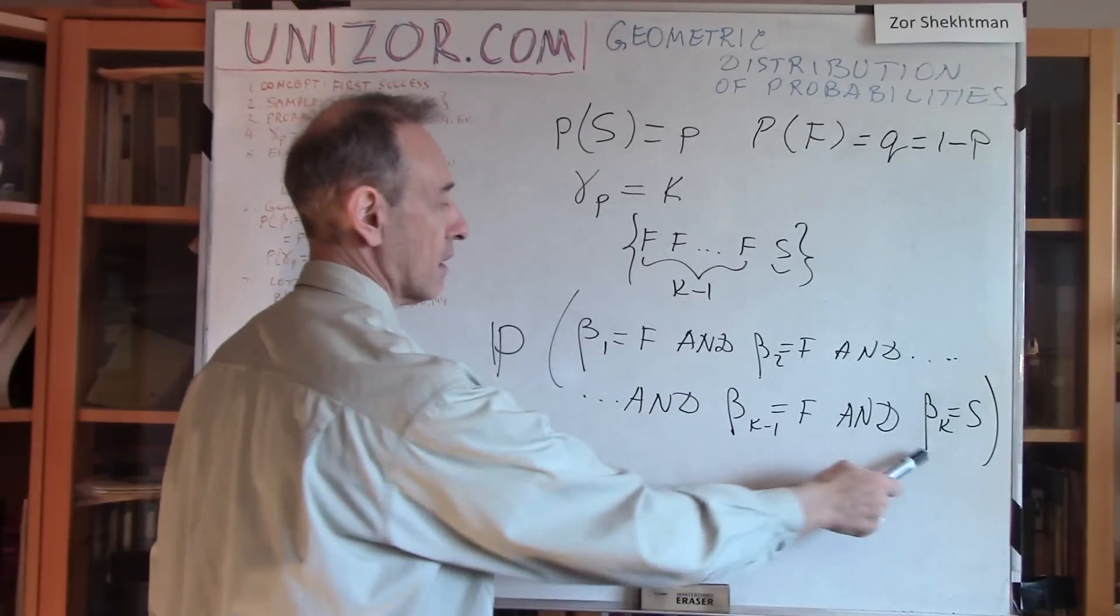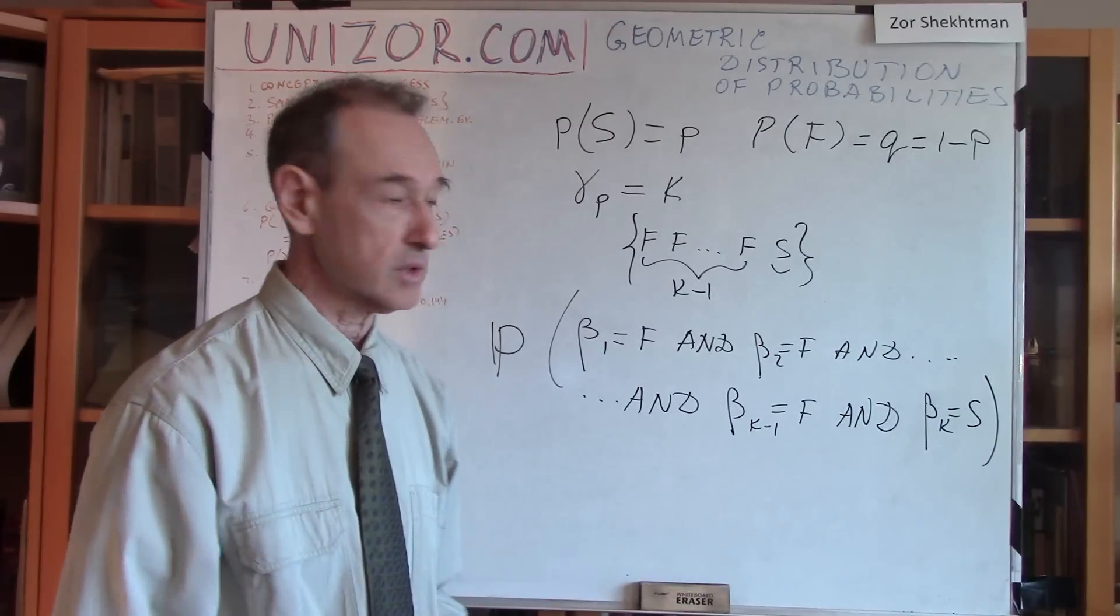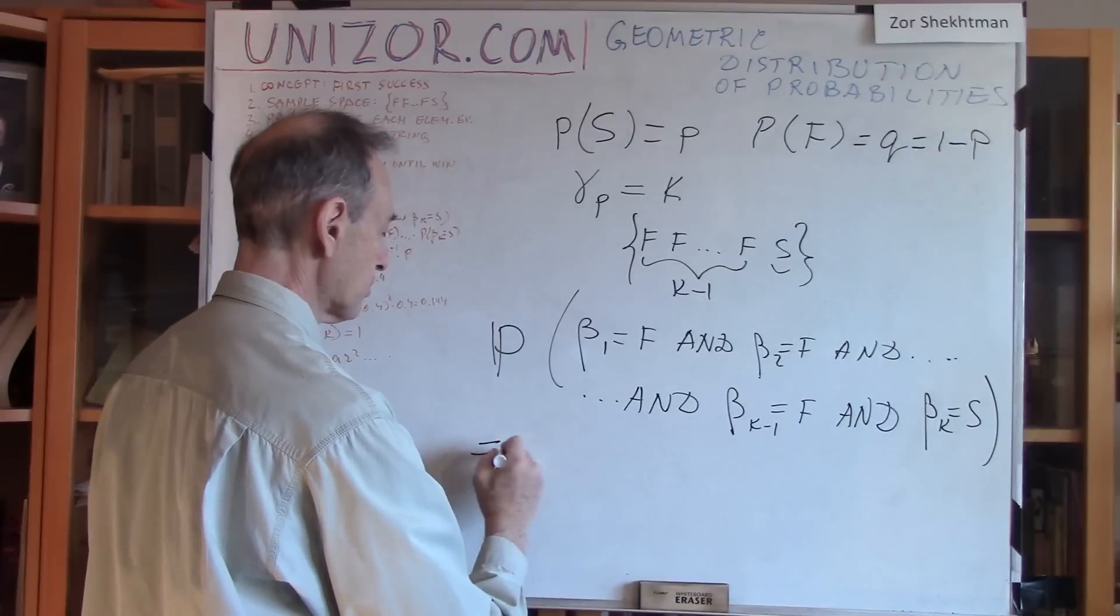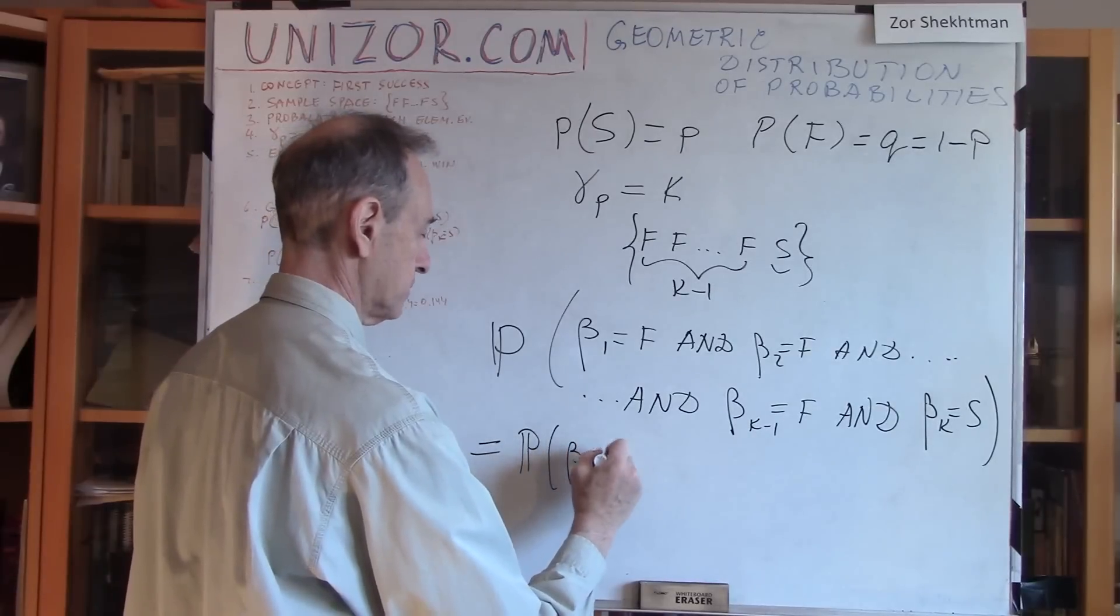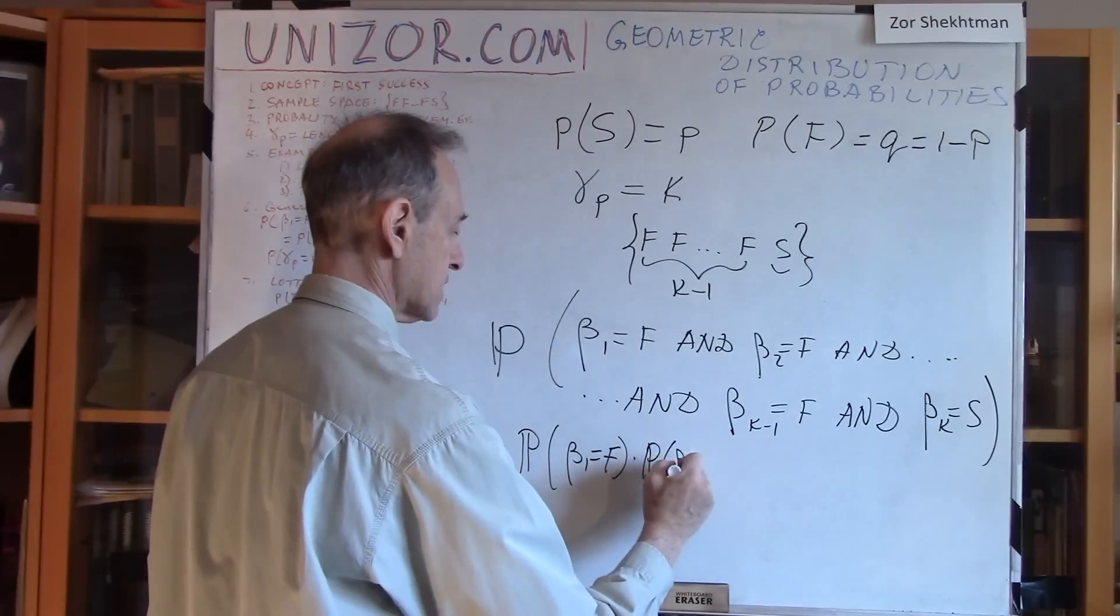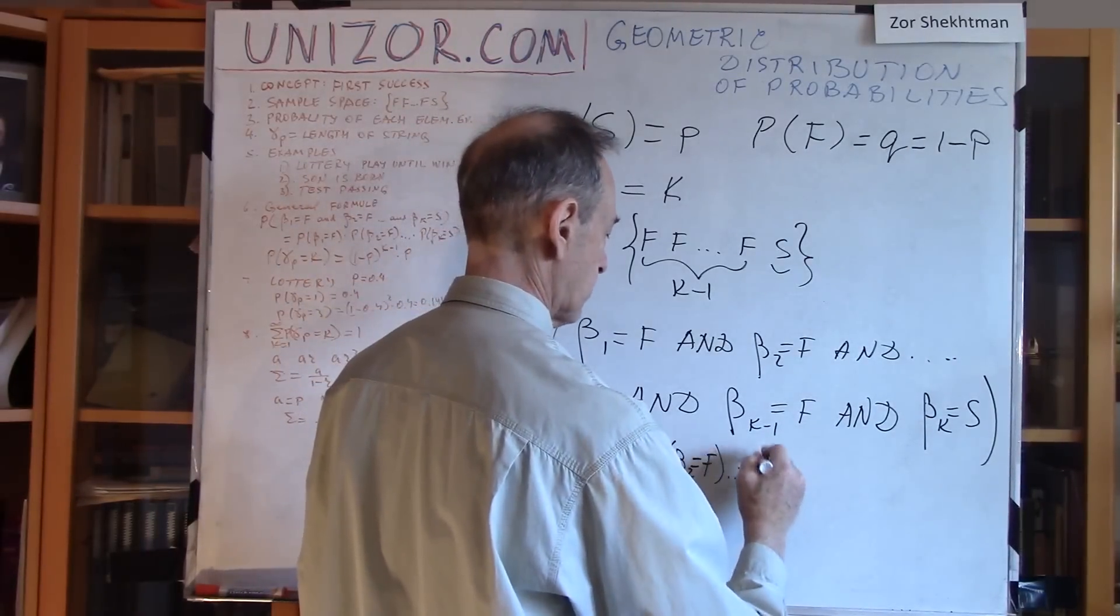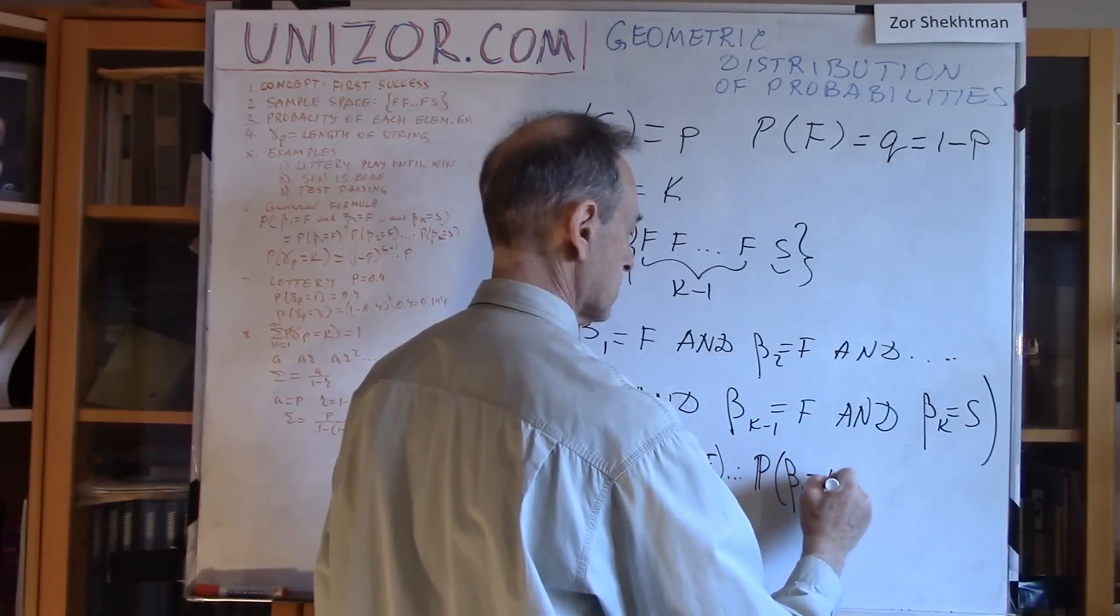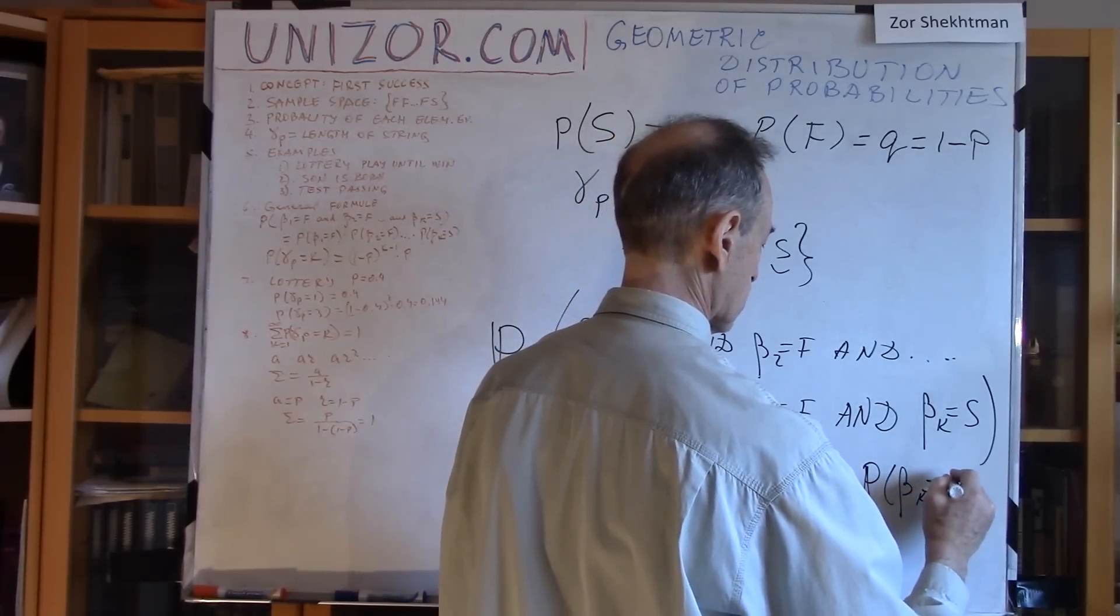because each one of them is the result of a Bernoulli experiment, right? Then the probability of the combination of these is equal to the product of probabilities times probability of the second being F, etc. times the probability of K minus 1 equals F, and probability of K's equals to S.